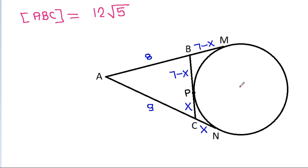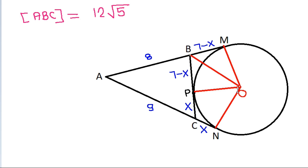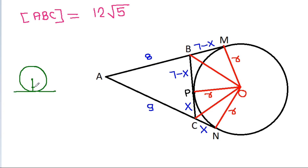Now suppose O is the center of the circle, and if we join OM, ON, OP, OB, and OC, then OM is radius, ON is radius, and OP is radius. And in any circle, radius and tangent are perpendicular to each other. So this angle will be 90 degrees, this angle will be 90 degrees, and this angle will be 90 degrees.